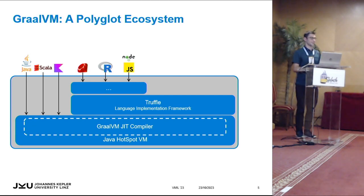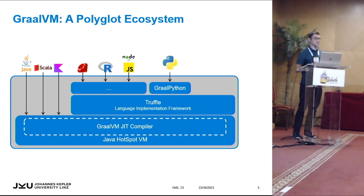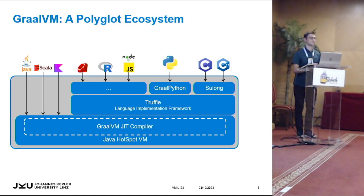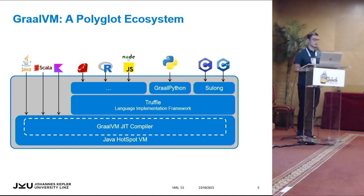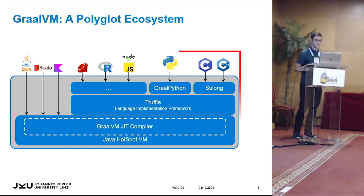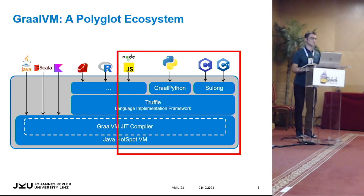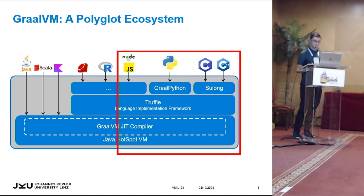For all other languages, if you want to implement your language to run on GraalVM, there is the Truffle language implementation framework, which helps you build an abstract syntax tree interpreter or bytecode interpreter very easily. This has been done for languages like Ruby, R, and JavaScript. One other language runtime is GraalPython, which accepts Python code, and for C and C++ there is the LLVM runtime called Sulong.